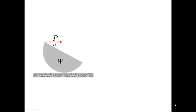In this problem, we have a semicircular cylinder of weight W tilted by a horizontal force P, such that the originally horizontal baseline is rotated by an angle alpha. Our task is to write down equilibrium equations describing this situation.